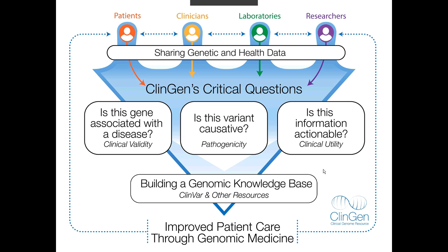Through the ClinGen resource, our partners, which include patients, clinicians, laboratories, and researchers, are able to share genetic and health data through publicly available portals, such as NCBI's ClinVar or our patient registry, GenomeConnect. This information is used to answer a number of critical questions. For example, is this gene associated with a disease, or assessing clinical validity? Is this variant causative, assessing pathogenicity? And is this information actionable, or assessing clinical utility? All of this information contributes to our collective genomic knowledge base, and this information is publicly available and can be used to improve patient care through genomic medicine.